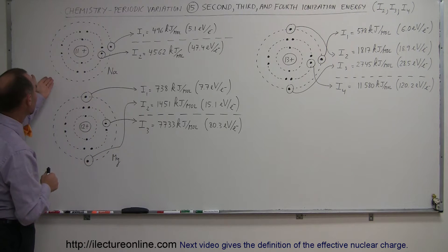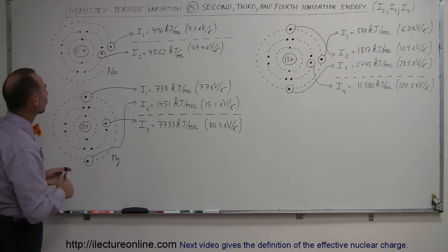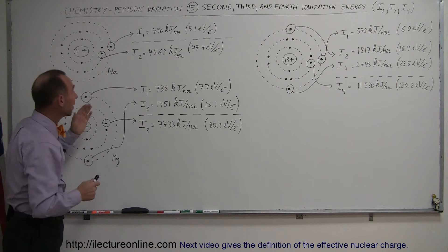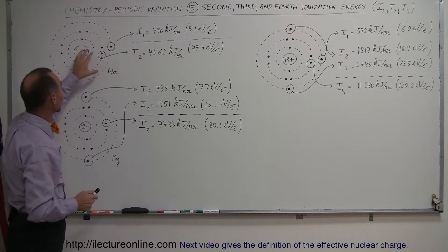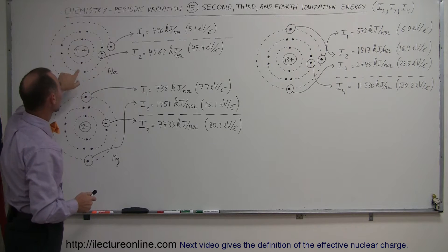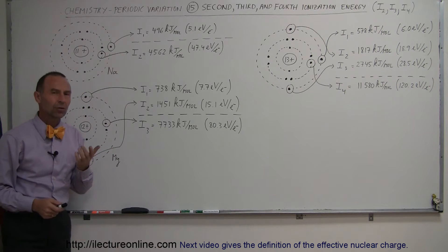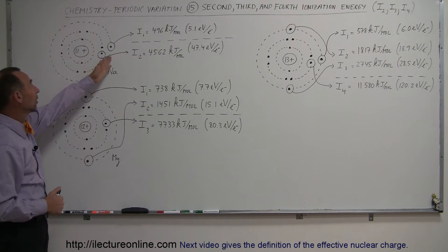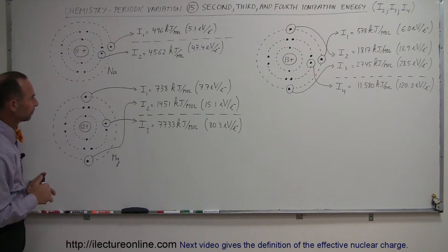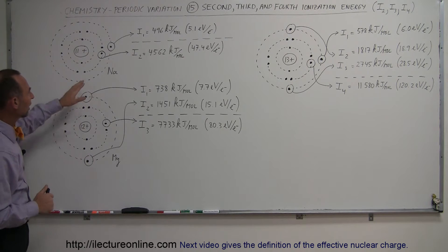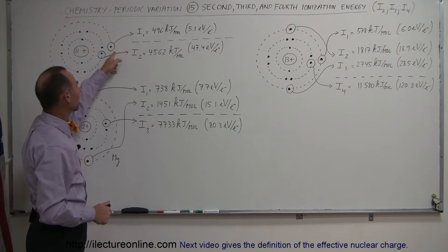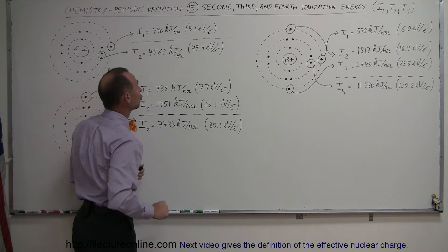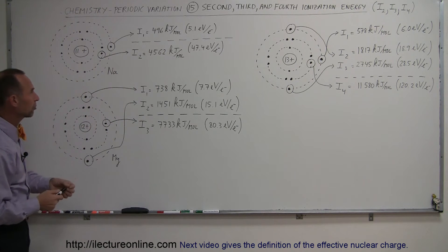Let's start off with the atom sodium. Sodium has 11 protons in the nucleus and 11 electrons. That means the 11th electron is in the third energy level, because the first energy level contains two electrons, the second contains eight, and so the last electron occupies the 3s orbital. Notice that it doesn't take a lot of energy to remove that final electron. The first ionization energy for sodium is fairly small — 496 kilojoules per mole, or 5.1 electron volts per electron.